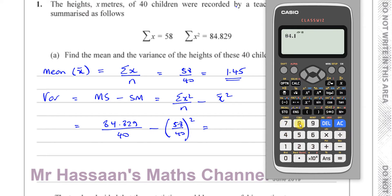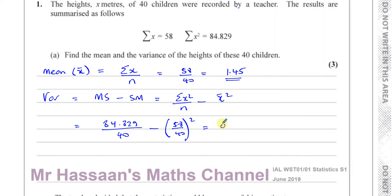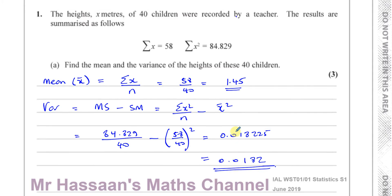So 84.829 over 40 minus the square of the mean — it's always best to use the fraction in case the mean is rounded. That gives you 729 over 40,000, which is 0.018225, which rounded to 3 significant figures gives 0.0182. There's the answer for the variance — that's part A.